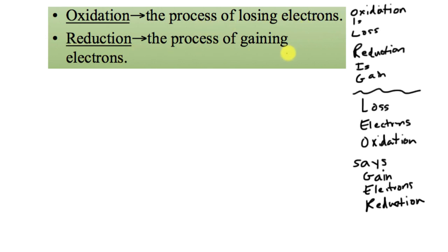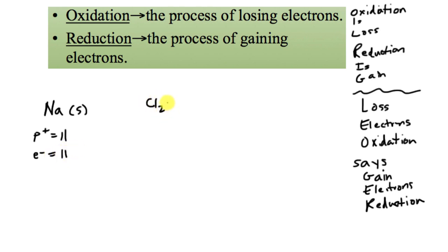Let's say we have sodium — not the sodium ion, but sodium solid, the elemental form. Its protons equal 11 and electrons equal 11, so it's neutral. We also have chlorine in the form of Cl2 gas because we're not talking about ions here. This is pure chlorine gas and pure sodium metal; chlorine has 17 electrons and a neutral charge.